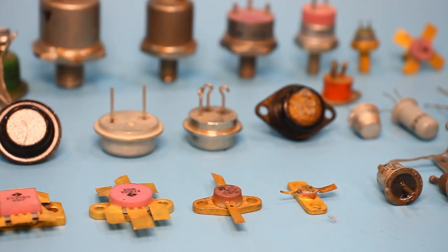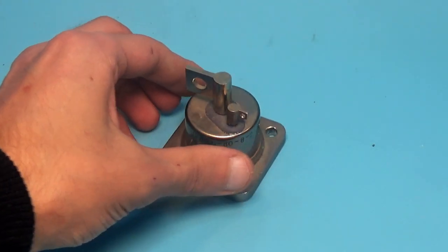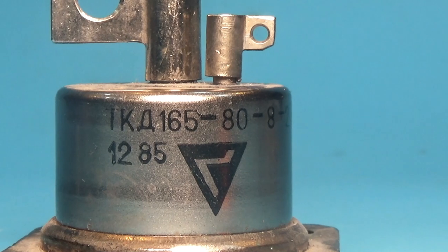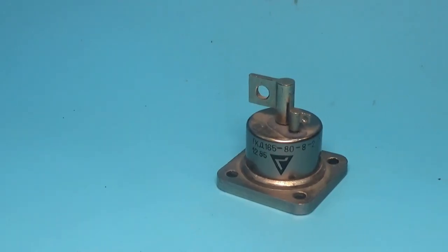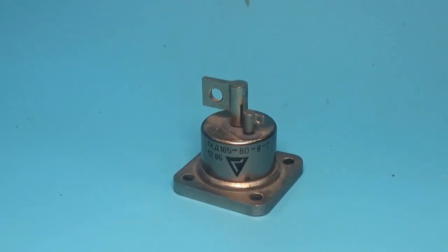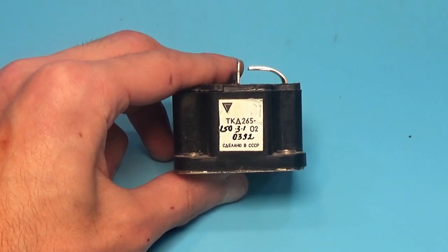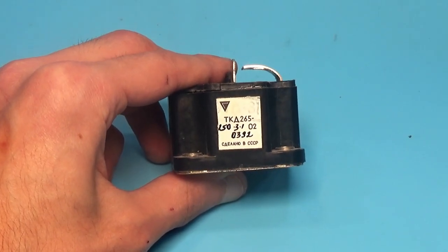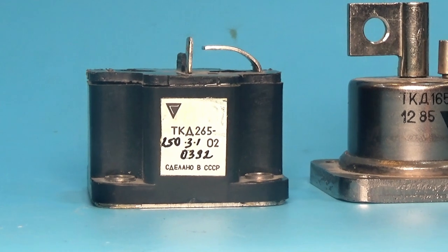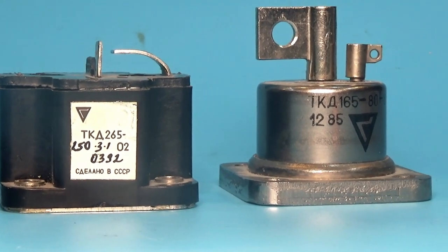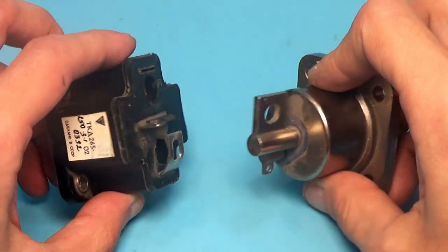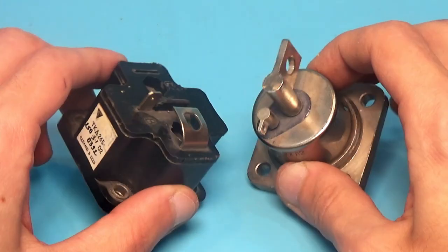What was the most powerful transistor in the USSR? Once I showed you this monster TKD165-80 with a constant collector current of 80A. Do you want to see its older brother? Meet TKD265-250 with 255A DC collector current. It is in a slightly different housing and doesn't look that it is much cooler than its brother, but it is really cooler.